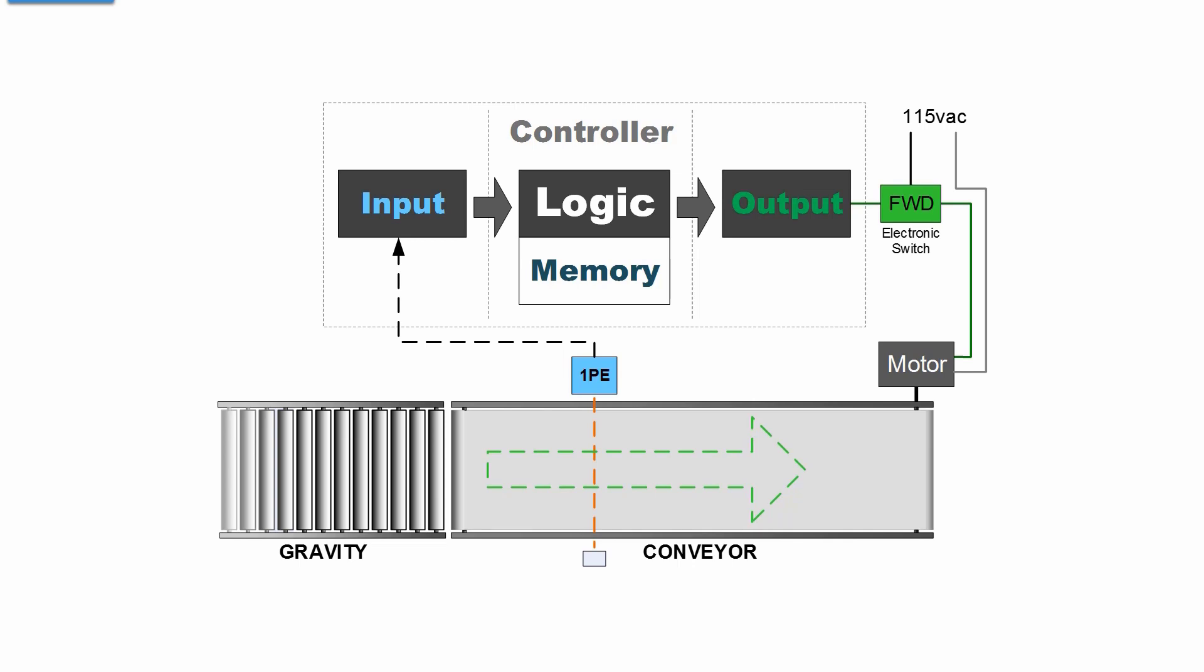Let's replace these three elements with three devices: an input device, a logical device, and an output device. Because we have precision with the photosensor, we do not need a reverse action to position the object. Just forward start stop control.